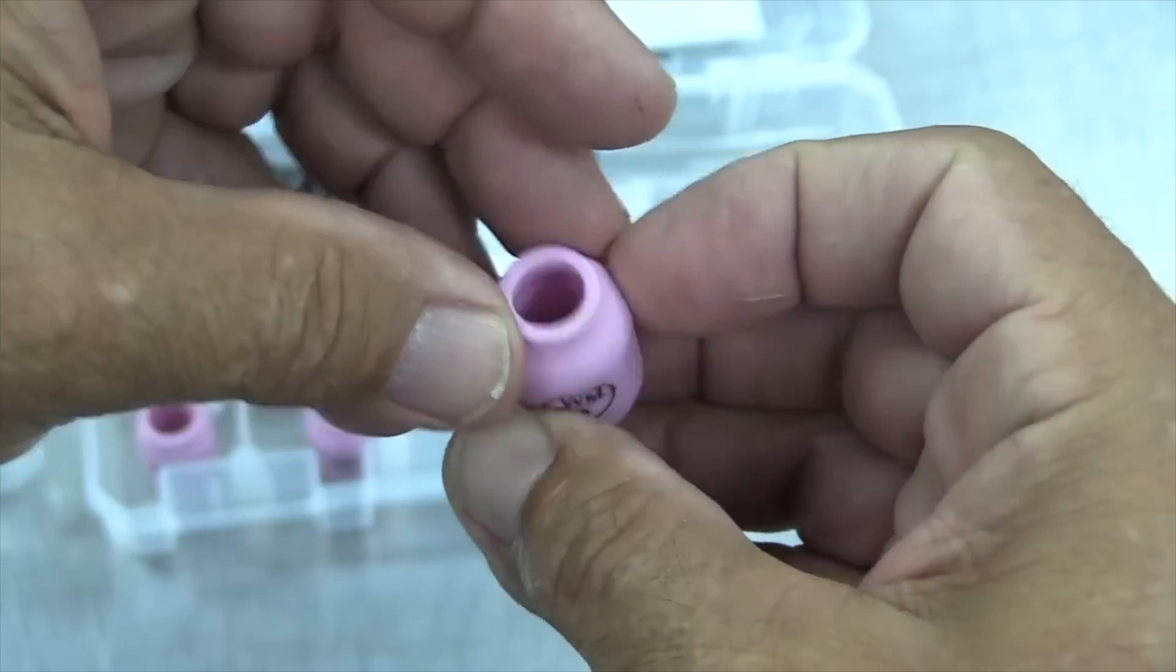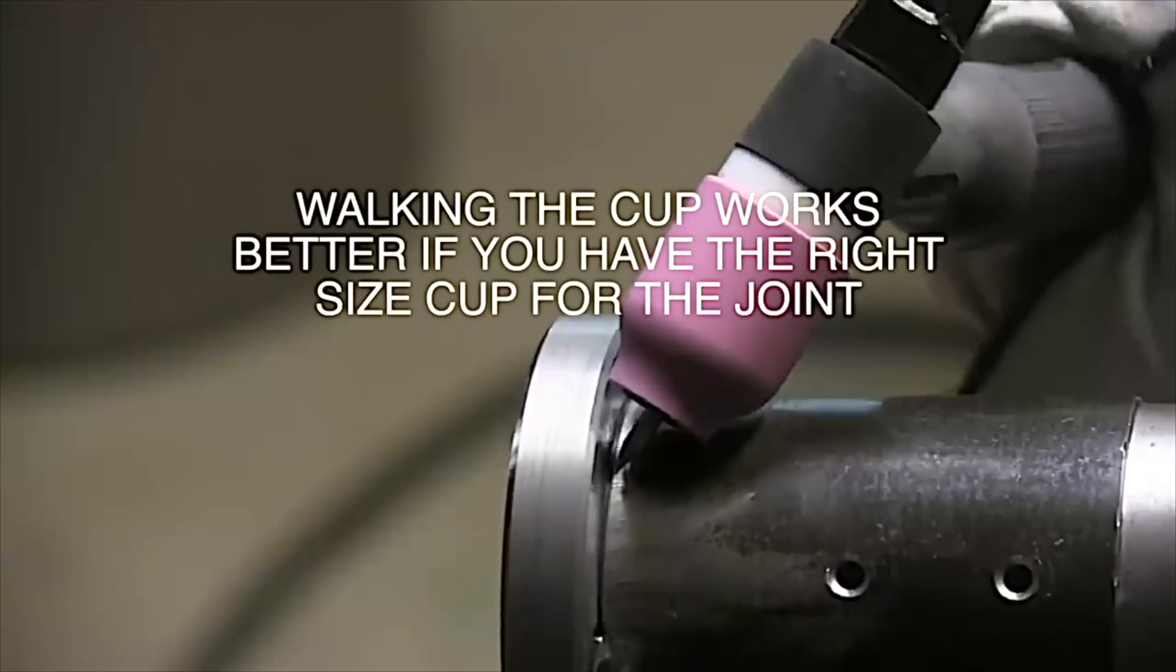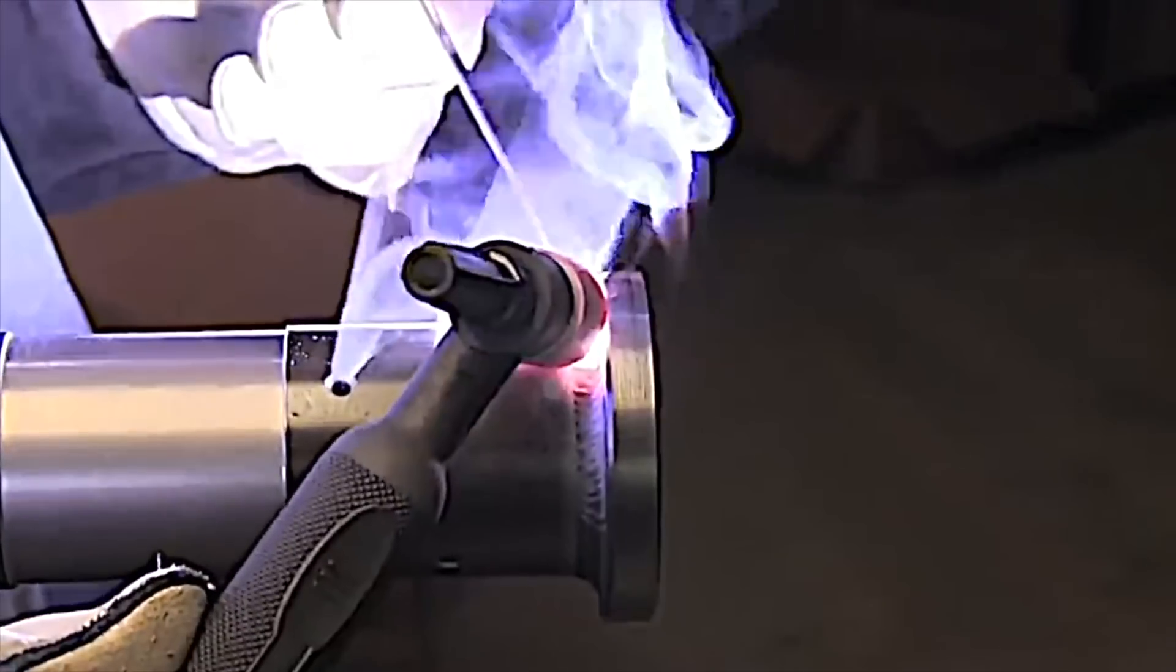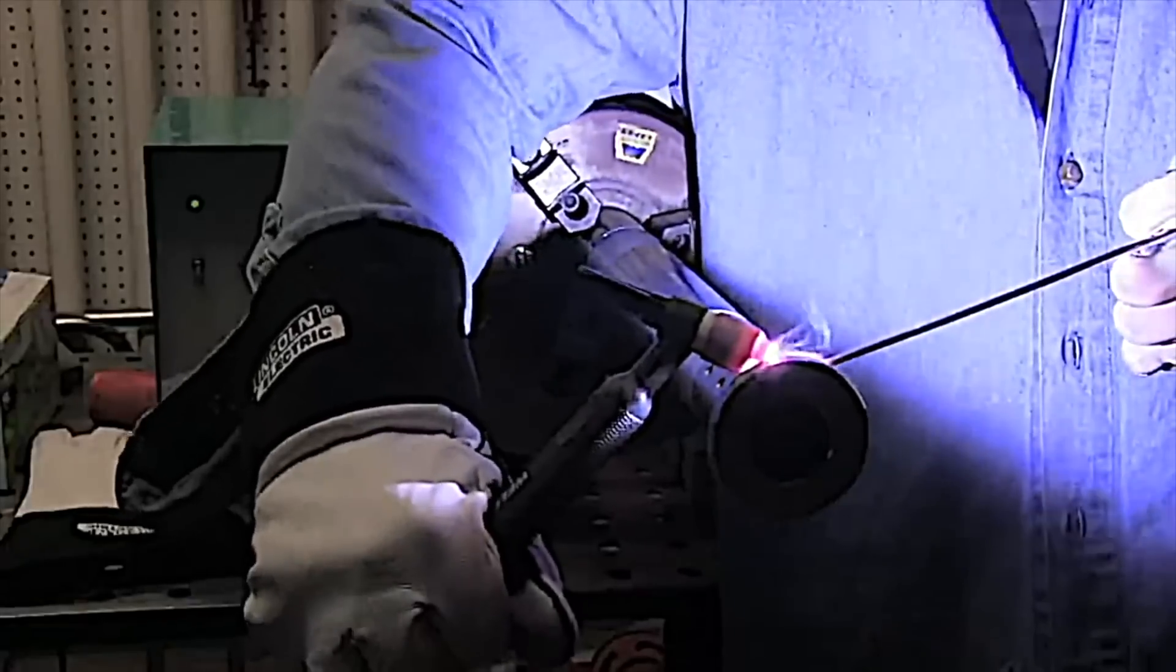Another reason to have a good assortment of cups is sometimes you might get into a situation like this where you're walking the cup on a small fillet weld. You don't want to use a whole bunch of extra gas. It doesn't require it. When you've got that cup right up against the metal like that, it requires a little bit less gas flow than it does if you've got a long stick out and freehand in it.